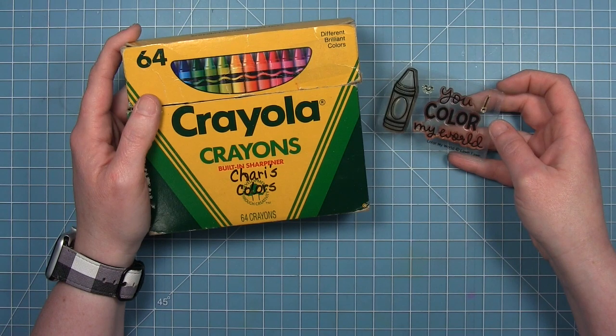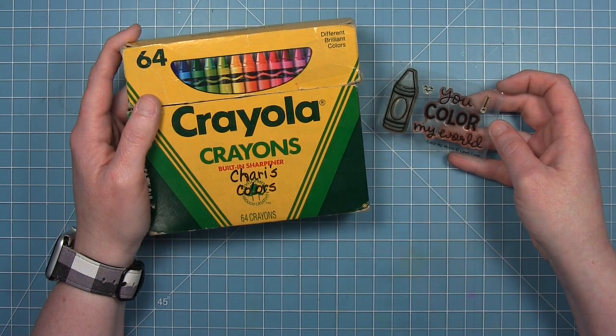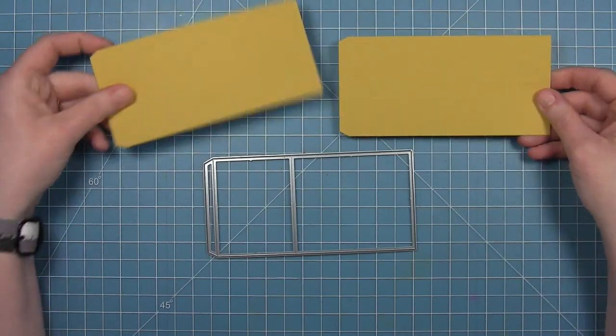I'm going to be using the Color My World Mini stamp set for this card, and I'm going to be using this shadow box die.